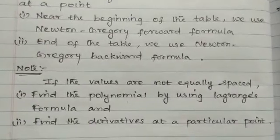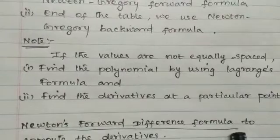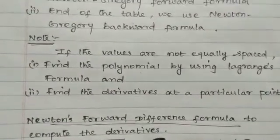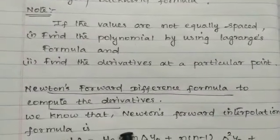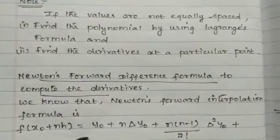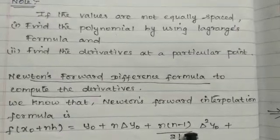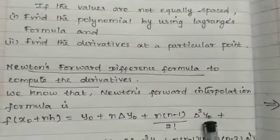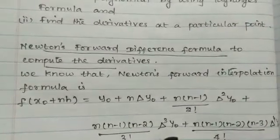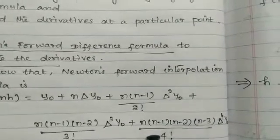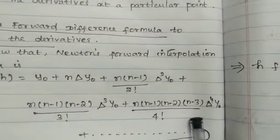Now we can derive the formula for Newton's forward difference formula to compute the derivative. We know that Newton's forward interpolation formula is: f(x₀ + nh) = y₀ + n·Δy₀ + n(n−1)/2! · Δ²y₀ + n(n−1)(n−2)/3! · Δ³y₀ + n(n−1)(n−2)(n−3)/4! · Δ⁴y₀.